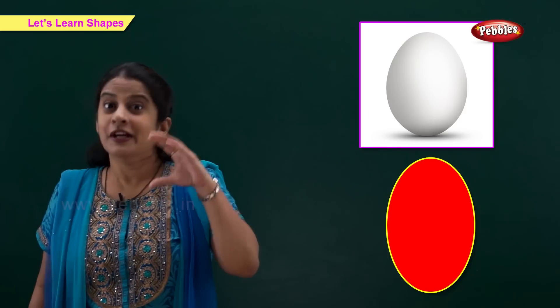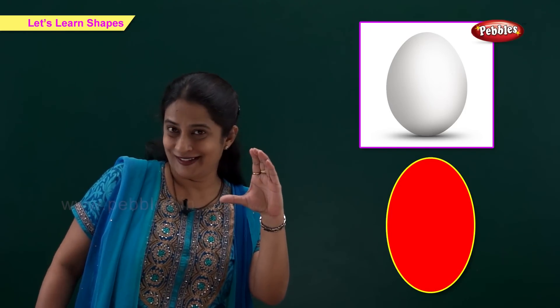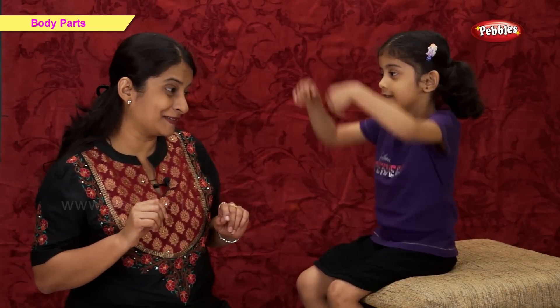Oval. The shape of an egg is like an oval. Show me your hands. Very good. Now. Okay. Show me your fingers. Excellent.